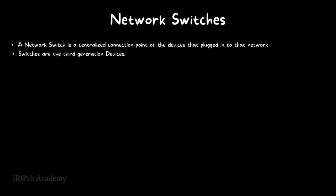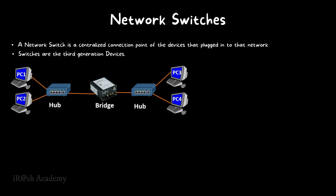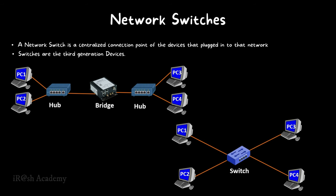Switches are called third-generation devices because first- and second-generation devices already existed: hubs and bridges. In the early Ethernet history, network hubs were used to connect devices and are considered the first-generation devices. However, hubs were very slow and had only a single collision domain. To resolve this, the network bridge came along as the second-generation device. Then the network switch came to life as the third-generation device.